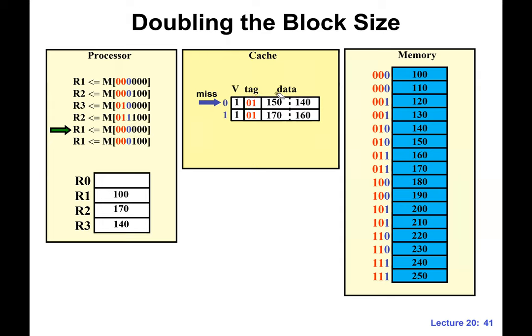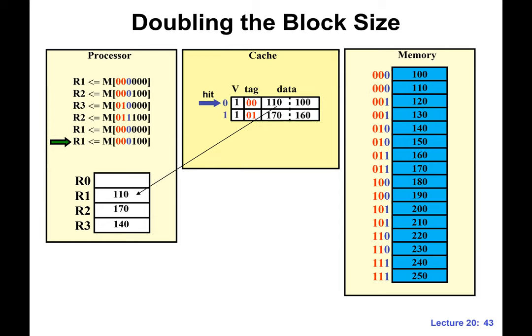The very last read: is it a miss or a hit? It's a hit. We are addressing cache line zero, and the tag matches — so the last one is a hit. Make sure you follow each step, checking the valid bit and tag bits to determine hit or miss.